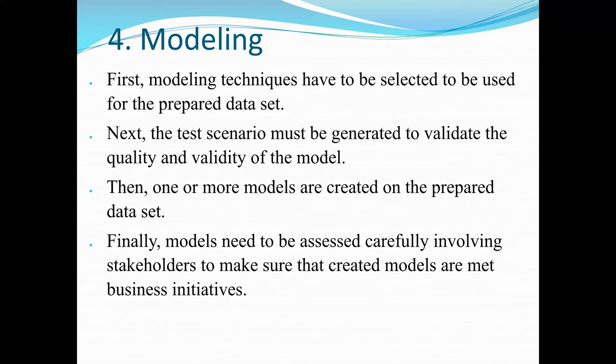For association modeling, we want to find an association relationship between two or more attributes. A very common textbook example is the shopping basket. For example, we want to find from supermarket data that 90% of the time when a customer buys bread, they also buy peanut butter. This relationship allows the supermarket manager to put only bread on sale but not peanut butter — because we know 90% of the time when you buy one item, you'll buy the second one.